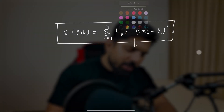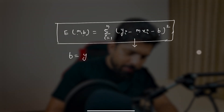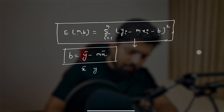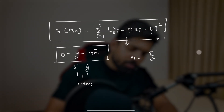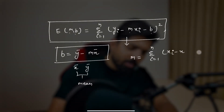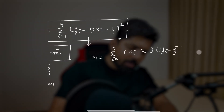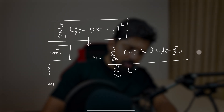We have two formulas to calculate m and b. First, let me write the formulas and then I'll show you how to derive them from scratch. To find b, the formula is: b = ȳ − m·x̄, where x̄ and ȳ are the mean values. To calculate m, the formula is: m = Σ(xᵢ − x̄)(yᵢ − ȳ) / Σ(xᵢ − x̄)².